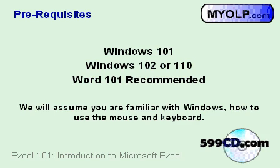The prerequisites for this course are Windows 101, Introduction to Computers, and either Windows 102, Introduction to Windows 98, or Windows 110, Introduction to Windows XP. We will assume you are familiar with Windows, how to move around, and how to use the keyboard and mouse. It is also recommended, though not required, that you take our Word 101 class first. A lot of the topics we'll cover today, like saving and loading documents, cut, copy, and paste, and printing, are the same between Word and Excel, and we cover them in a lot more detail in our Word course.